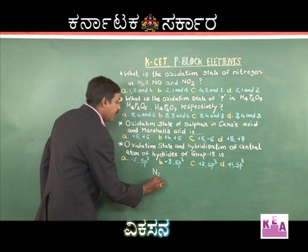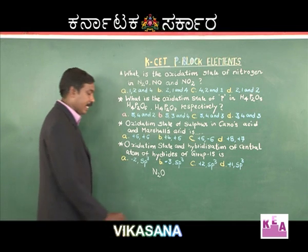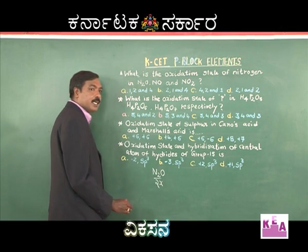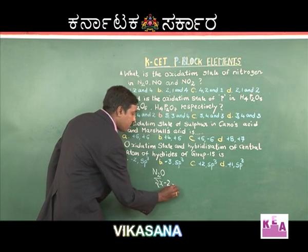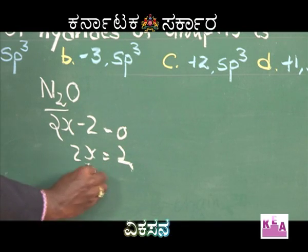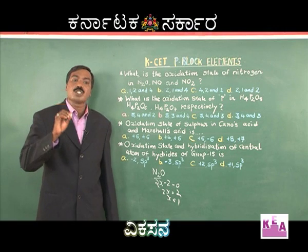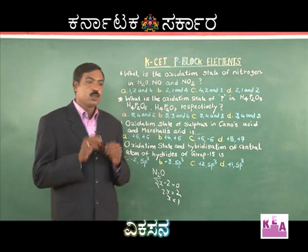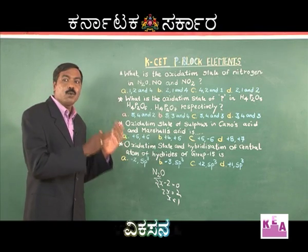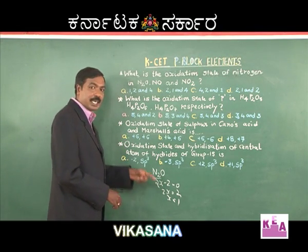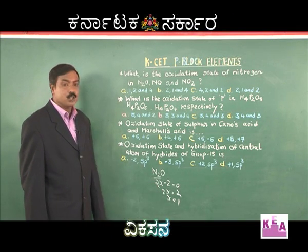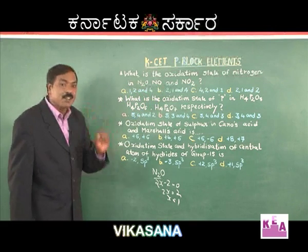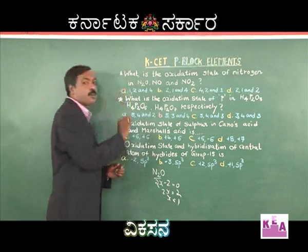For N₂O: 2x + (−2) = 0, so 2x = 2, therefore x = +1. Nitrous oxide has an oxidation state of +1. One more exam tip: whenever you assess, do not look at all the options. Look for the one option which carries the reward. In this question, N₂O gives +1, and only the first option has +1 in the first position. Therefore, the most appropriate answer is the first one.